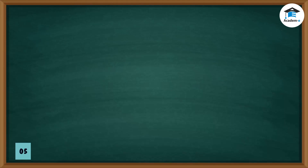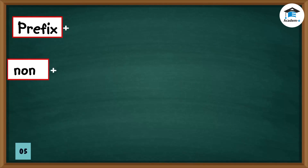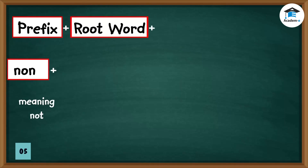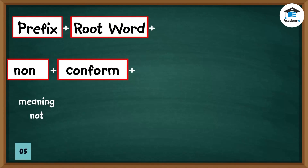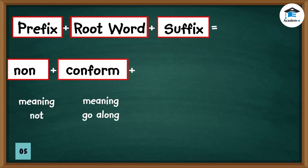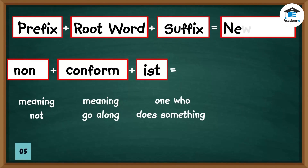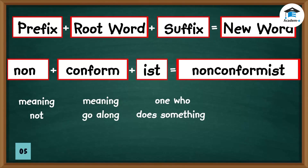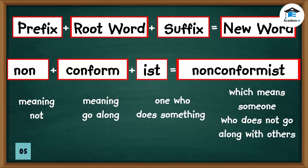To find out the meaning of the word nonconformist, let us break it up into three word parts. Prefix: 'non,' meaning 'not.' Root word: 'conform,' meaning 'go along.' Suffix: '-ist,' meaning 'one who does something.' Putting together the three parts, we now have the word 'nonconformist,' which means someone who does not go along with others.